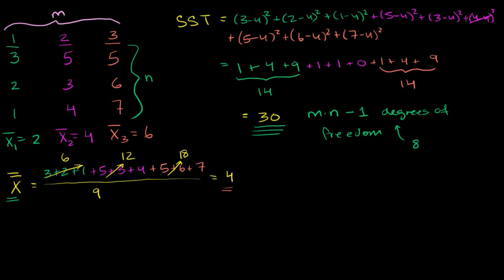In the last video, we calculated the total sum of squares for these nine data points. These nine data points are grouped into three different groups, or more generally, into m different groups. What I want to do in this video is figure out how much of this total sum of squares is due to variation within each group versus variation between the actual groups. So first, let's figure out the total variation within the group — we'll call that the sum of squares within.